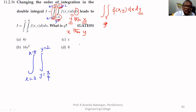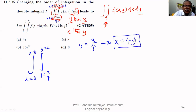Now we know that y equal to x by 4 has to be changed to x equal to 4y — so x is expressed in terms of y. When y equal to x by 4, then x equal to 4y. This is for the lower limit. For the upper limit, y equal to 2 means x equal to 8. So the inner limit is changed to x equal to 4y as the lower and x equal to 8 as the upper.